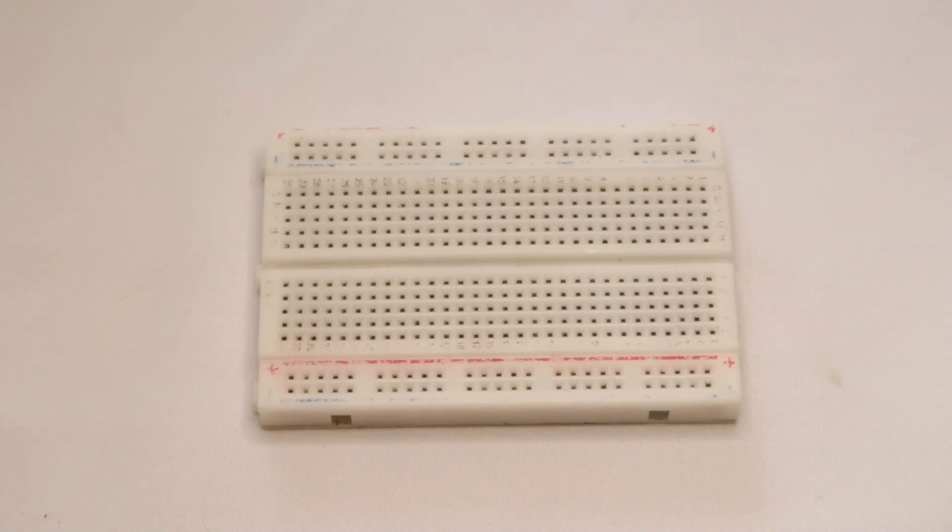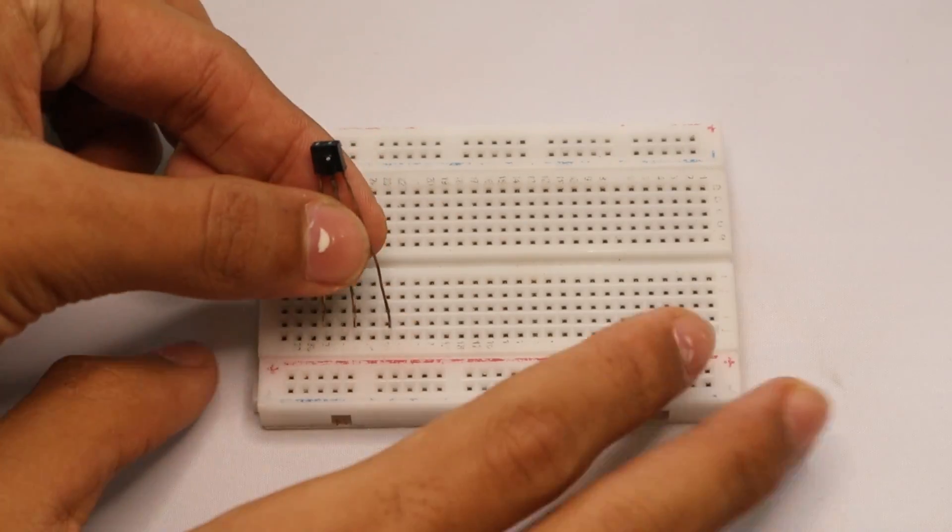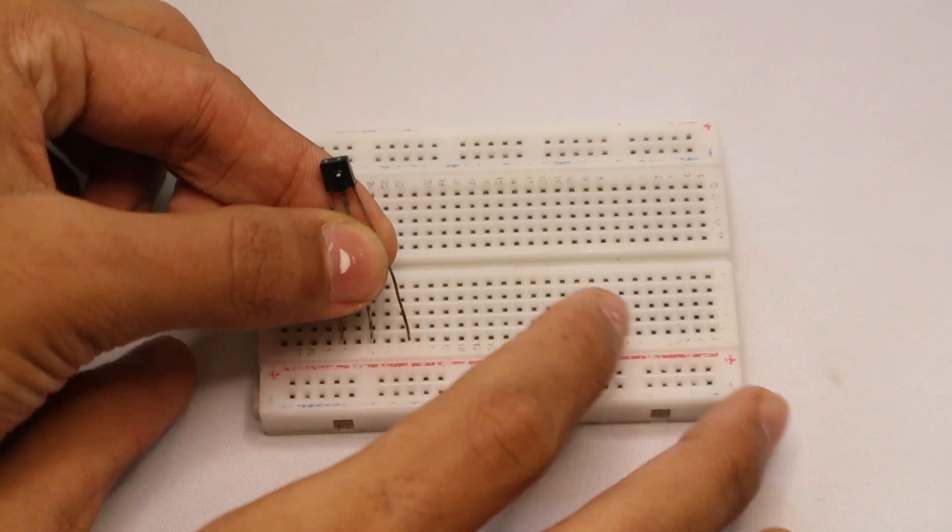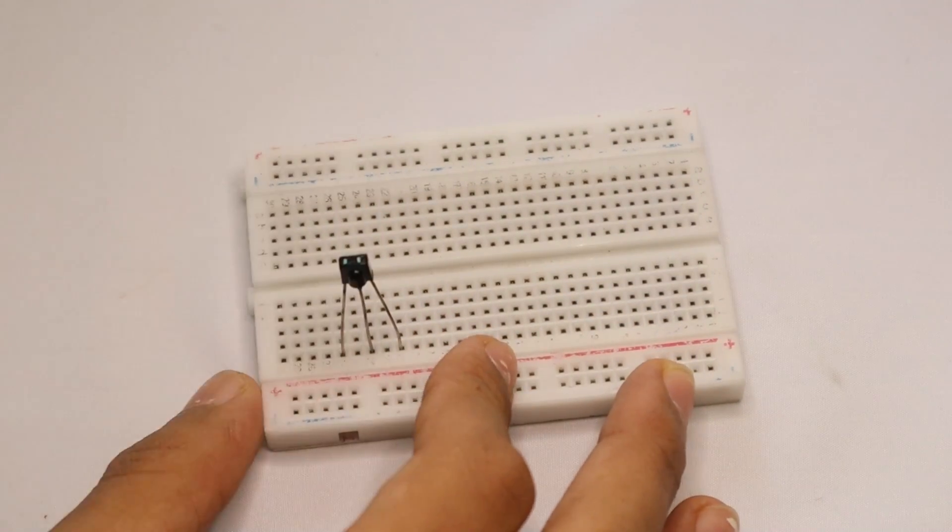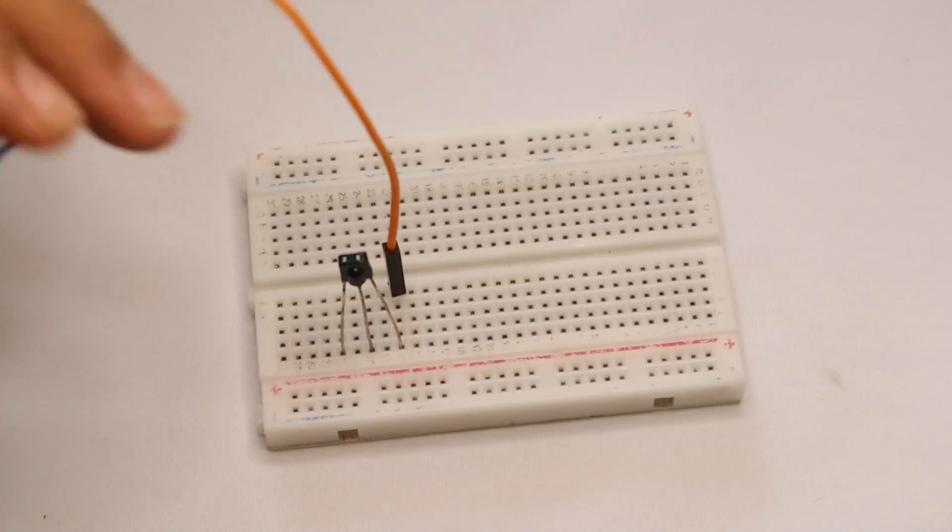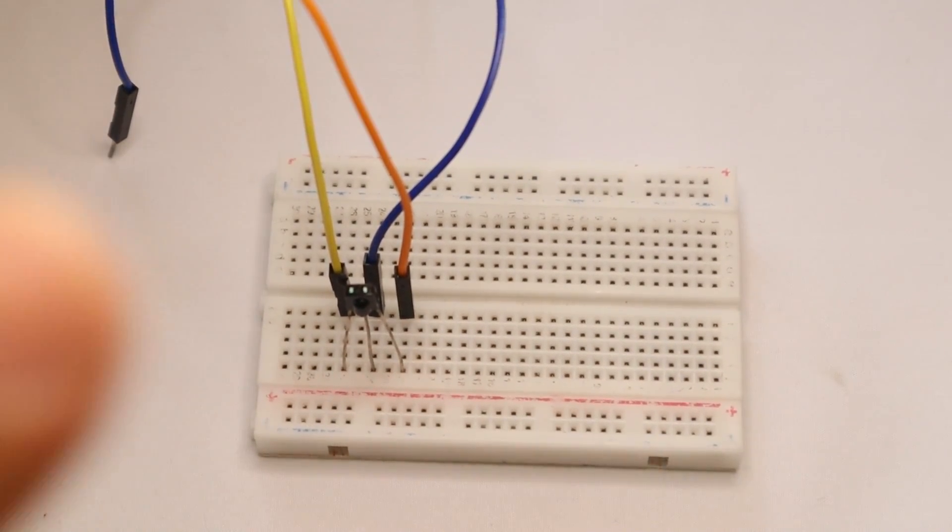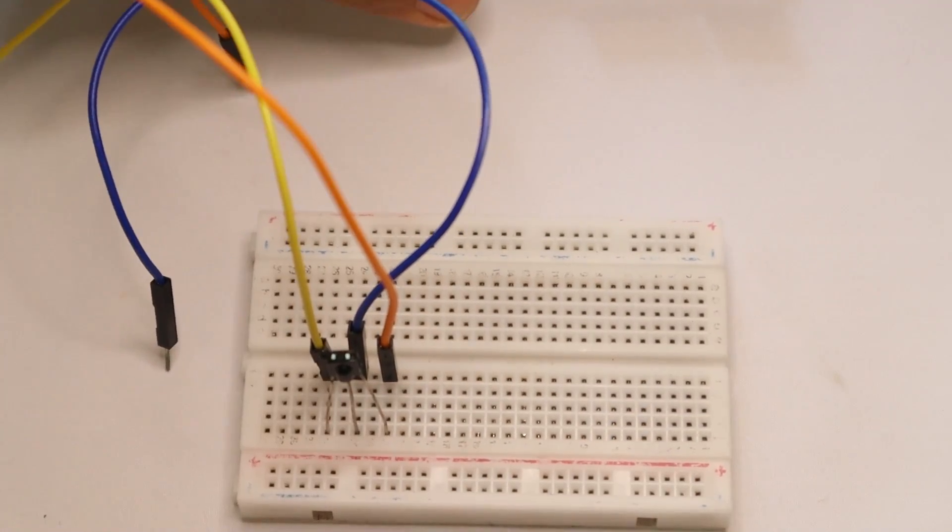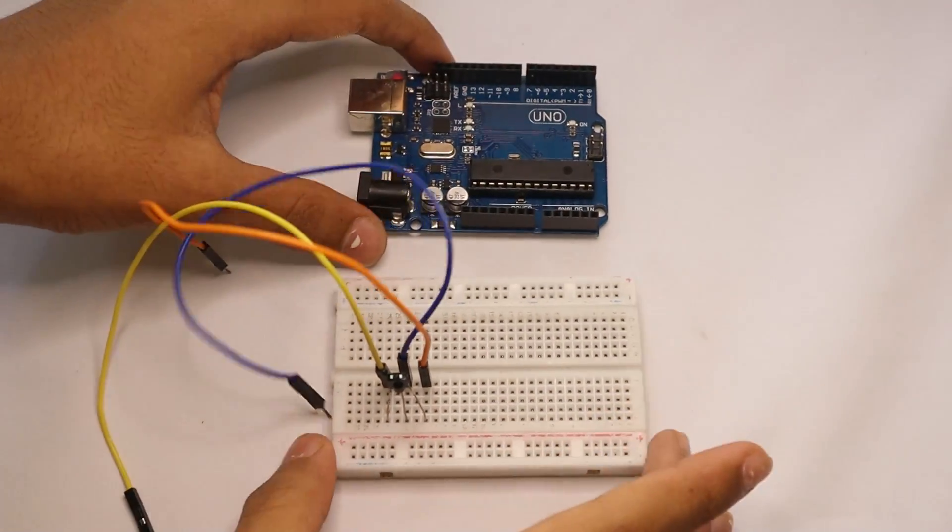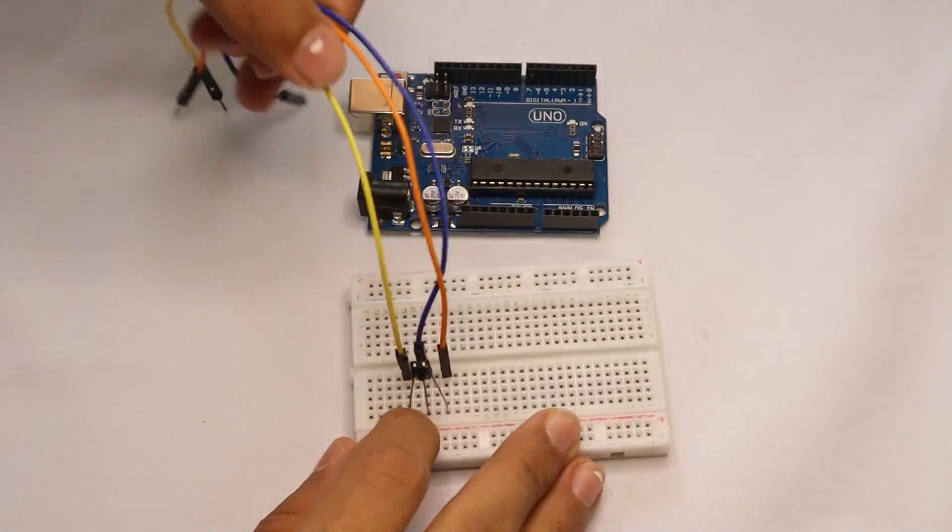So to start making it, first connect your IR receiver to any of these bars like that. Now connect the three wires like that. Now you need to bring your Arduino Uno. Now connect the first wire.